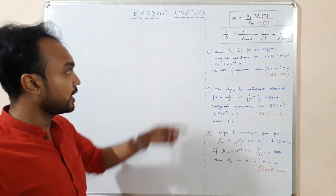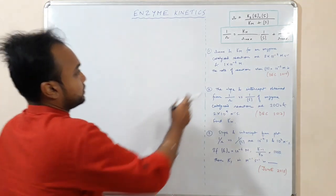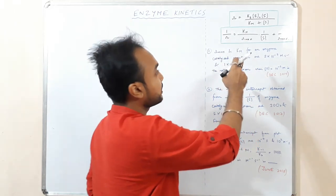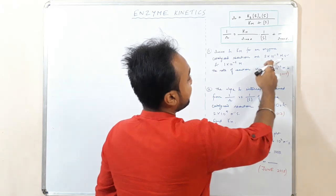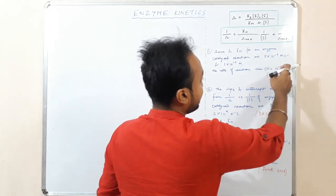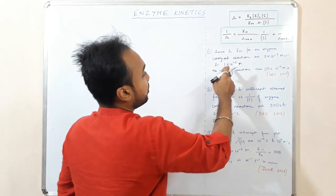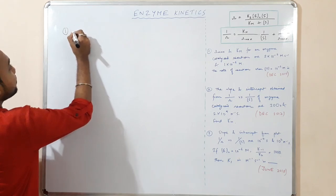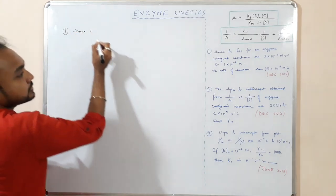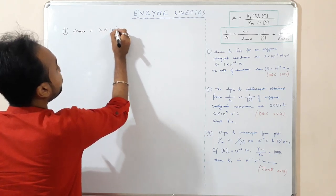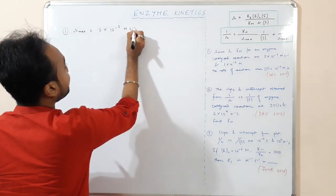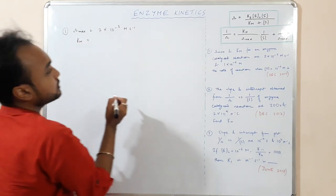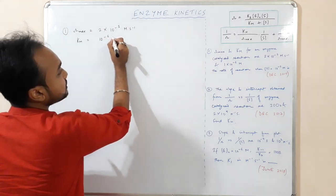The first numerical: given that Rmax and Km, the Michaelis-Menten constant, for an enzyme-catalyzed reaction are 2×10⁻³ mol·s⁻¹ and 1×10⁻⁶ mol respectively. So Rmax is 2×10⁻³ mol·s⁻¹ and Km is 10⁻⁶ mol.